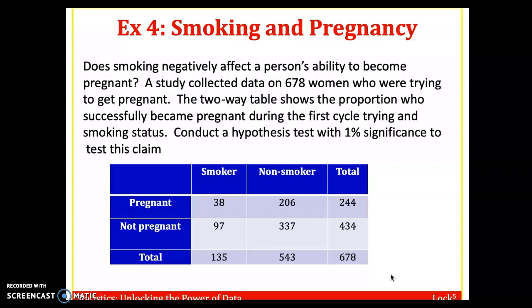Hello, welcome to the chapter 6.3 video lecture series. In the last video we were going over example four, conducting a hypothesis test to see whether smoking negatively affects a person's ability to become pregnant. Here we're looking at a sample of 678 women, and we figured out whether they were pregnant or not in the first cycle trying, and then we looked at whether they were a smoker or non-smoker.